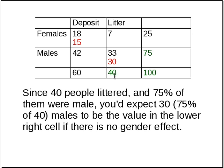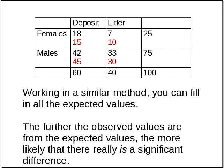Similarly, because 40 people did litter and 75% of them were male, you'd expect 30 — 75% of 40 — to be the value in the lower right cell, if there's no gender effect. Working in a similar method, you can fill in all the expected values.